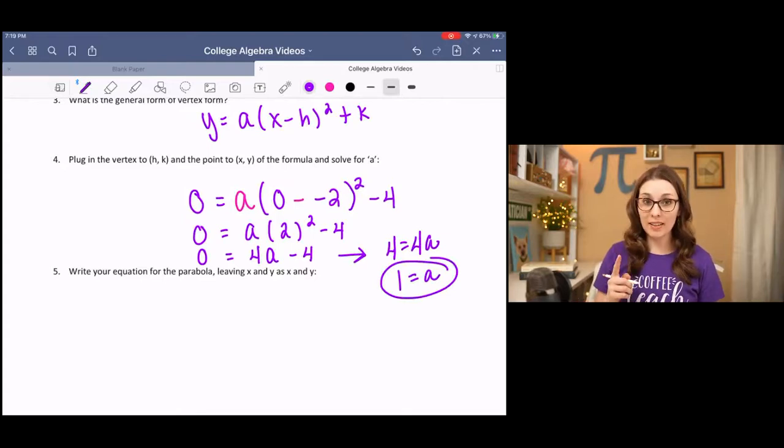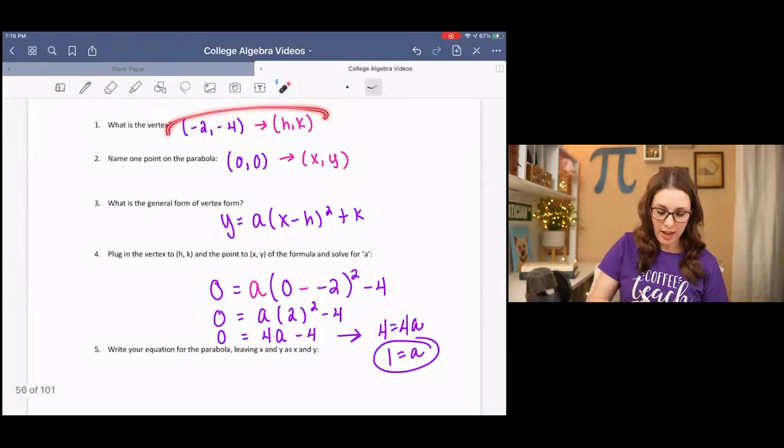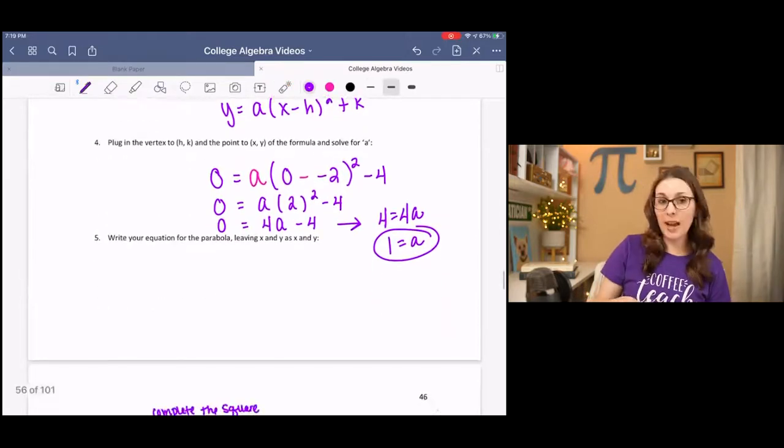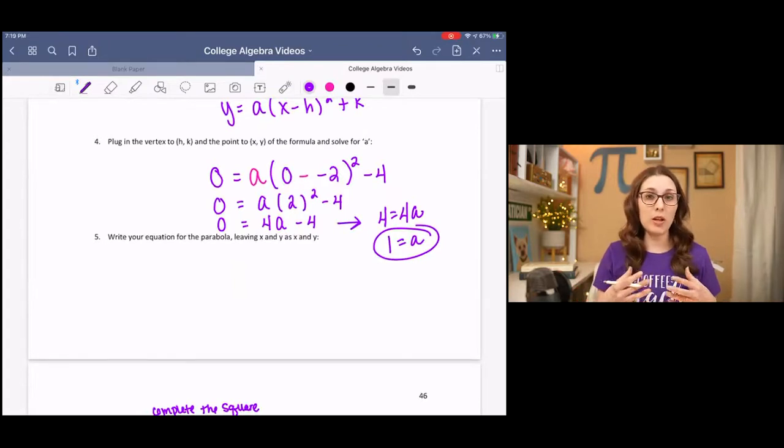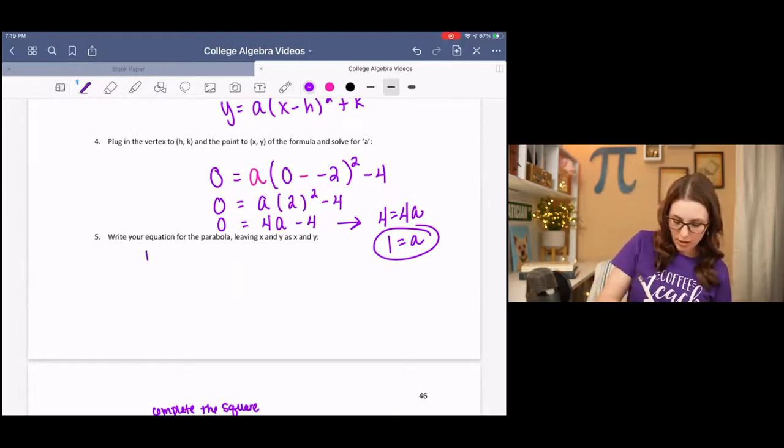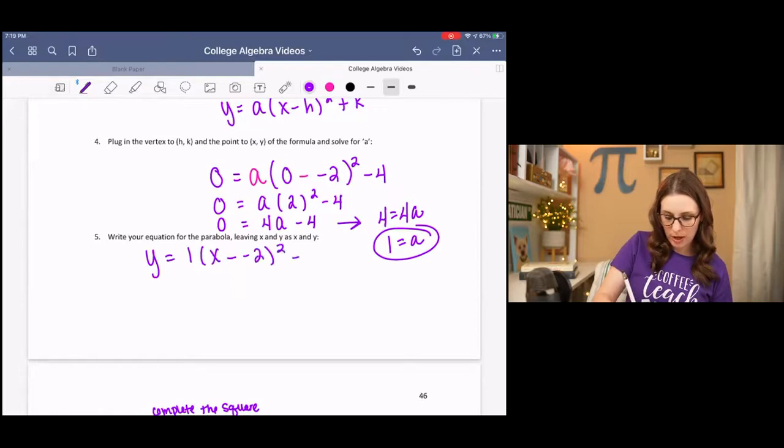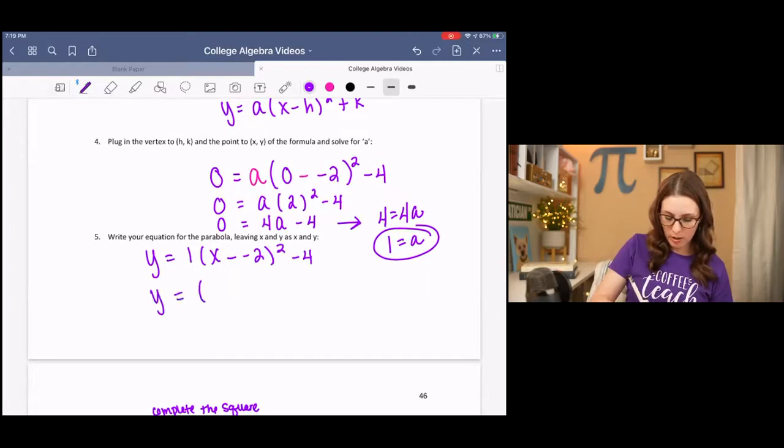Now that we have a, and we have h and k, we can write our equation. We want to leave y and x as y and x because we're writing the equation of the parabola. So y stays the same, a was 1, h was negative 2, k was negative 4.